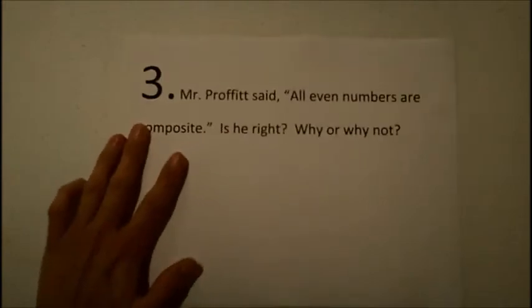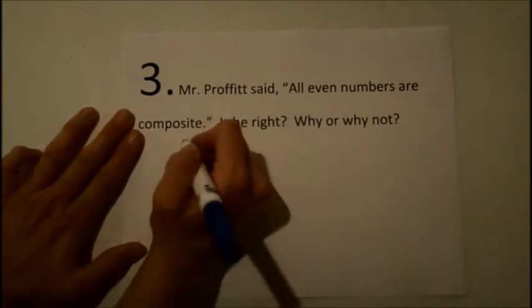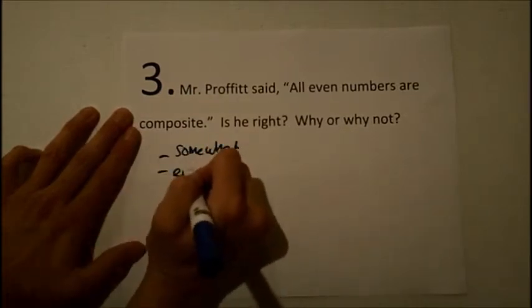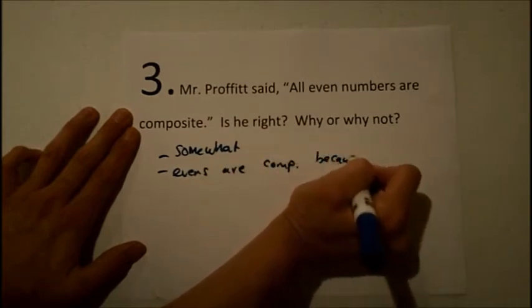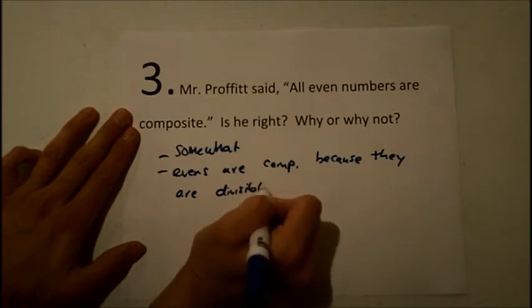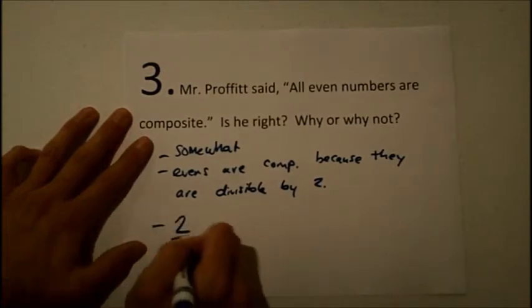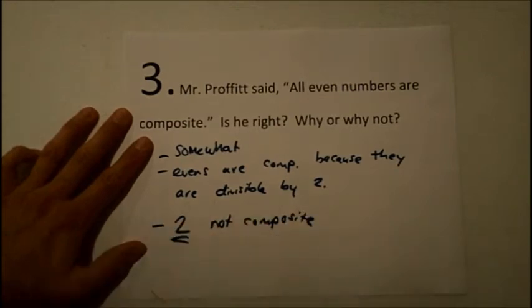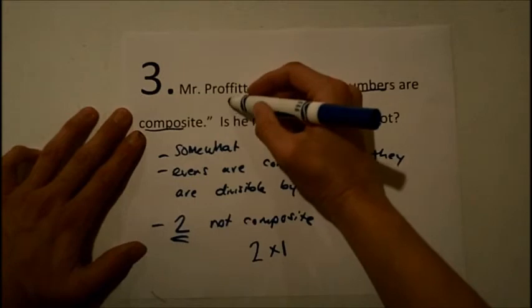Question number three. Mr. Prophet said that all even numbers are composite. Is he right? Why or why not? Well, the answer is that he's right somewhat. The reason is that even numbers are composite, because they're divisible by 2. But the thing that he's wrong about is the number 2. 2 is not composite, because its only factors are 2 and 1. So he's right, except he needs to say, but except for 2.